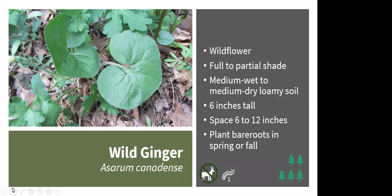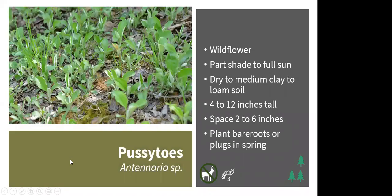Wild ginger emerges in spring and its foliage remains throughout the growing season. It prefers full shade but can do okay in part shade, and likes medium loamy soil, tolerating slightly acidic conditions. It is a spreader that will form colonies — that natural spreading form is a theme with many of these plants. It produces a dark red flower at the base of the plant, often hidden under the leaf cover. It's deer resistant, supports 1 caterpillar species, and can be planted as bare roots in spring or fall.